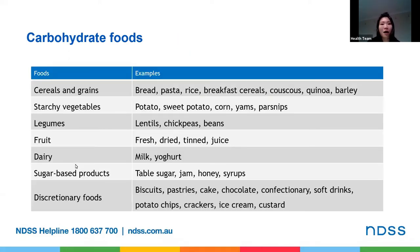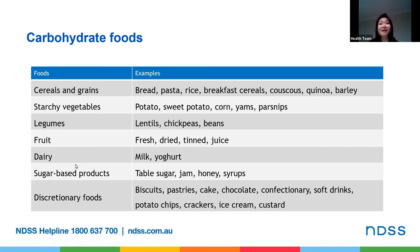Here is the list of carbohydrate foods. From the grains and cereal section: bread, pasta, rice, breakfast cereal, couscous, quinoa, and barley. Starchy vegetables include potato, sweet potato, corn, yams, and parsnips. Legumes include lentils, chickpeas, and beans. With fruits, pretty much all fresh, frozen, dried, tinned, as well as fruit juice are carbohydrates. In dairy, you've got milk and yogurt. Sugar-based products include table sugar, jam, honey, and syrup. And discretionary or sometimes foods include biscuits, pastries, cake, chocolate, confectionery, soft drinks, potato chips, crackers, ice cream, and custard, just to name a few.